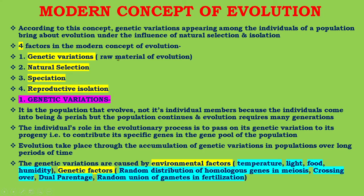Genetic variation is the raw material of evolution. It is the population that evolves, not its individual members, because individuals come into being and perish, but the population continues, and evolution requires many generations. The individual's role in the evolutionary process is to pass on its genetic variation to its progeny — to contribute its specific genes to the gene pool of the population. Evolution occurs through the accumulation of genetic variations in a population over a long period of time.